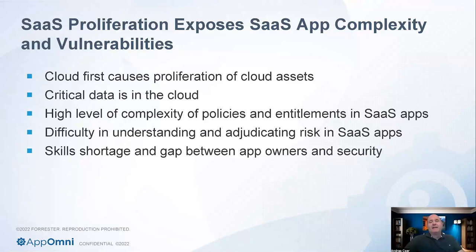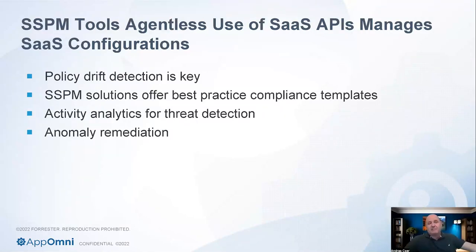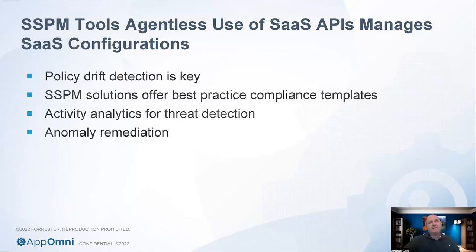It's good to see that SSPM tools are agentless — they don't require agents or downtime. The simplest way these SSPM tools work is that they have a read-only account to the policy management API of a SaaS application or multiple SaaS applications. They can query the entire set of policies and detect policy drift. So if we define a certain set of policies in Salesforce or Microsoft 365 and the SSPM tool sees a drift from that known-good gold standard, it can notify an app owner, security, or multiple folks within the organization — including security incident response teams.